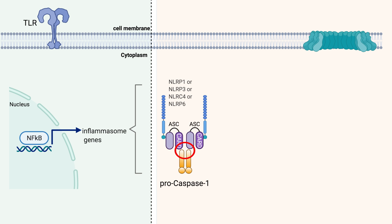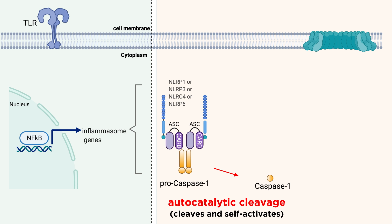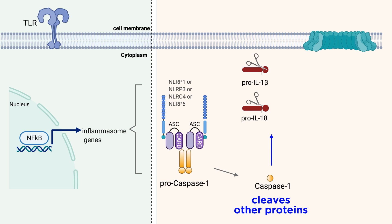The way Procaspase-1 binds to the inflammasome enables autocatalytic cleavage of Procaspase-1, meaning that it cleaves and activates itself. Activated caspase-1 can then cleave Pro-IL-1 beta and Pro-IL-18.